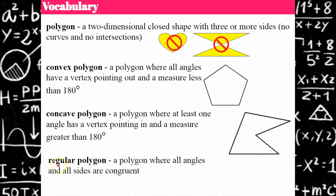Last but not least, we have a regular polygon — you probably heard about this in a previous grade level. A regular polygon is one where every angle and every side have the same measure.